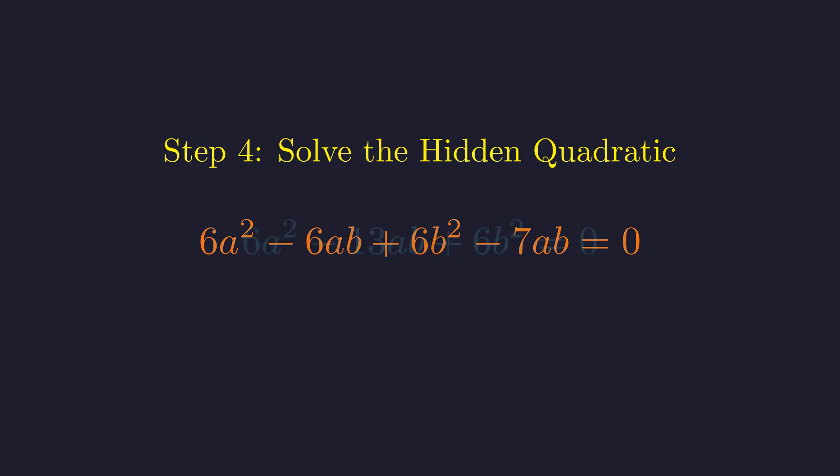This gives us our homogeneous quadratic: 6a² - 13ab + 6b² = 0.